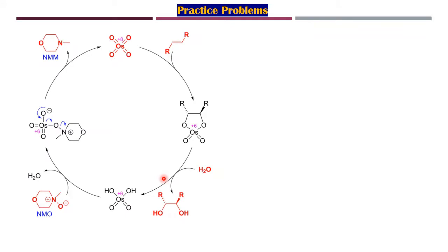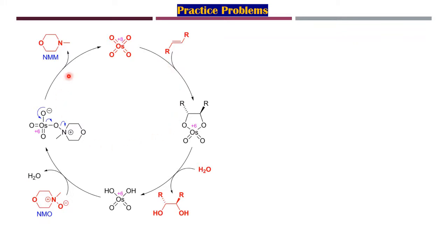Some practice problems along with the entire mechanism: osmium tetroxide undergoes a 3+2 cycloaddition reaction. On using water, hydrolysis takes place; osmium goes from the +8 oxidation state to the +6 oxidation state. The co-oxidant is NMO, that is N-methylmorpholine N-oxide, which helps convert osmium from the +6 oxidation state back to +8. That is how the catalytic cycle works.